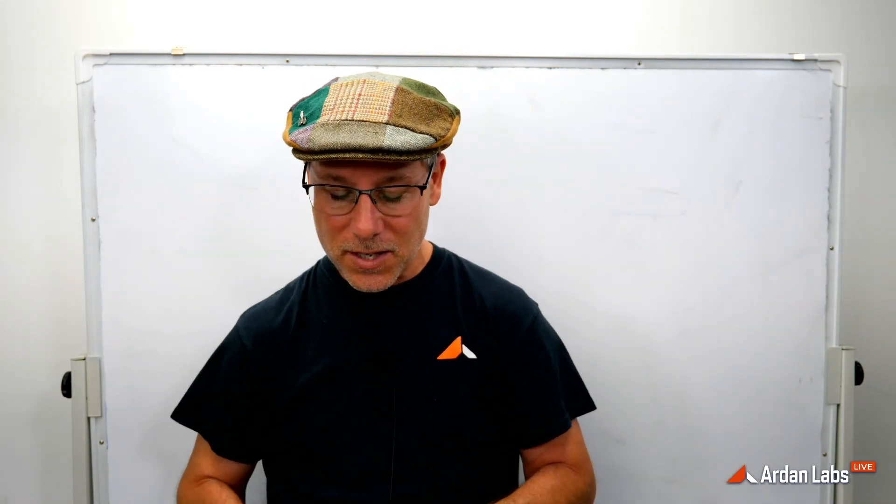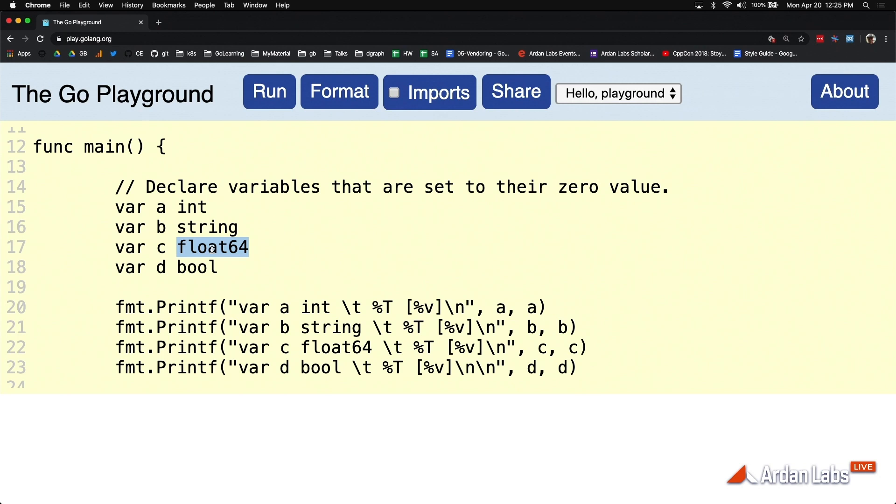One of the guidelines and idioms that I'm going to share with you is when you're declaring that variable and it's going to be starting in its zero value state - notice I didn't say default, I said zero - you're going to see me using var. I always use var to denote the zero value state when I'm doing a variable construction. Zero value for int is zero, strings are empty, and bool in its zero value state would be false. We're going to use var for zero value.